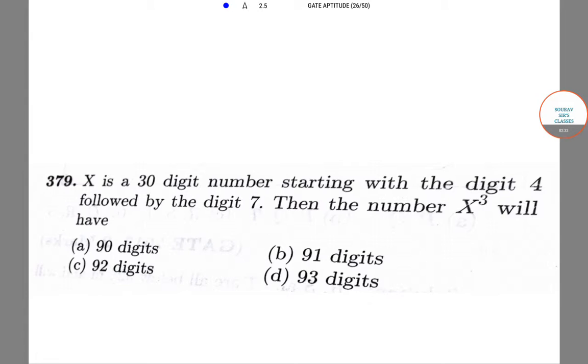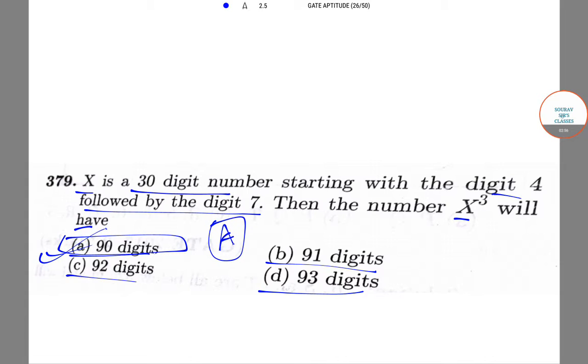The next question is, X is a 30-digit number starting with the digit 4 followed by the digit 7. Then, the number X cubed will have option A 90 digits, option B 91 digits, option C 92 digits, and option D 93 digits. The number X cubed will have 90 digits. So, option A is the correct answer.